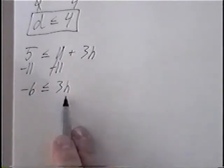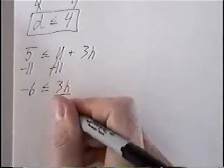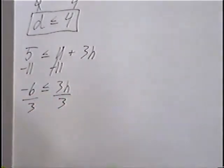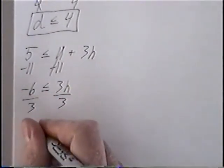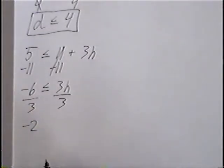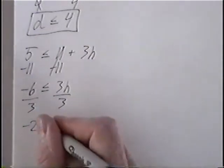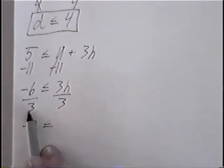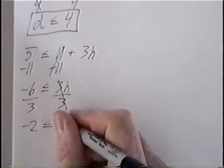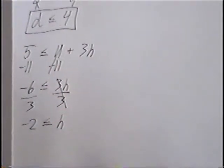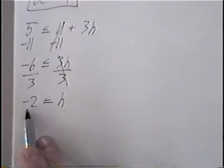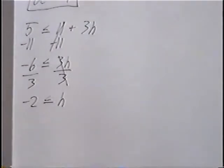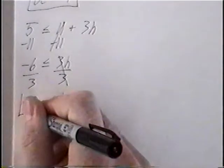The last step: we have 3 times h, so to get rid of the 3 we can divide by 3. Negative 6 divided by 3 would be negative 2. And we're dividing by a positive 3 — again, dividing by a positive number does not change the inequality; it's only when you divide by a negative number. The 3s would cancel and h would come down. The final answer is negative 2 less than or equal to h.